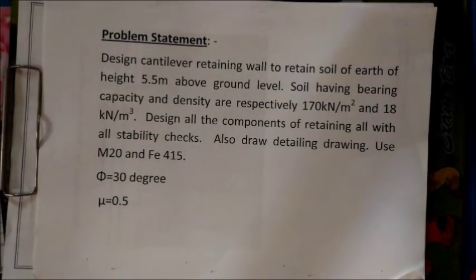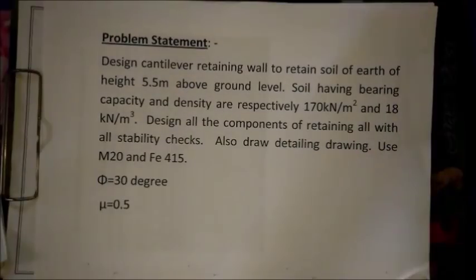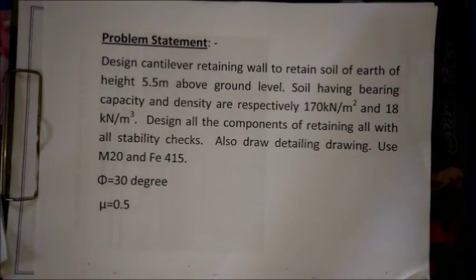With the detailed drawings, we will use M20 grade of concrete and Fe415 steel. We are given phi = 30 degrees, which is the internal friction angle of the soil, and mu = 0.5, which is the coefficient of internal friction.